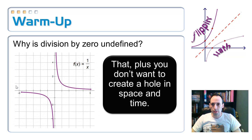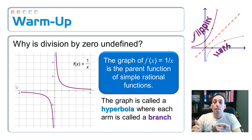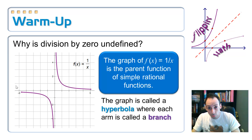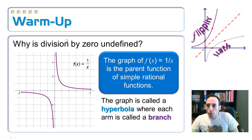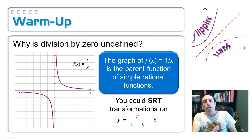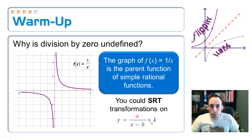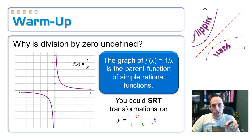Let's go back to our graph. The rational parent function is one divided by x — that's the graph you see there. That graph is called a hyperbola — like parabola, but really excited. Each of the purpley bits are called branches, and this thing has two of them. We can use SRT transformations on this. What do you think the a, h, and k are going to do? We're going to look at this on Geometry Sketchpad and see what those parameters do.